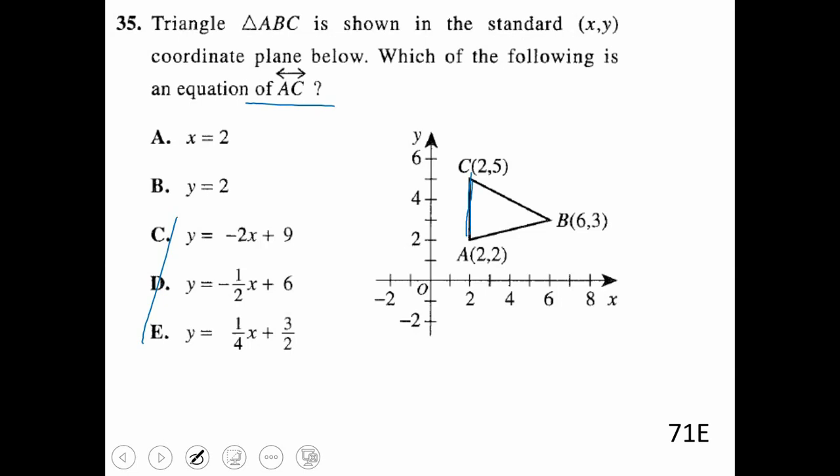So this is where students will get confused. So the x-axis is horizontal. But AC is only going to go through the x-axis at 2. Since it only goes through the x-axis at 2, that means our equation is x equals 2. So try not to overthink something like that.